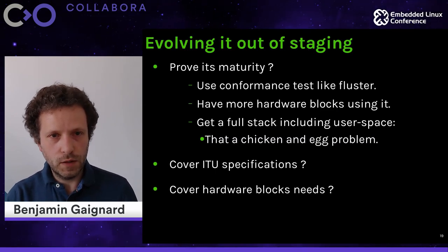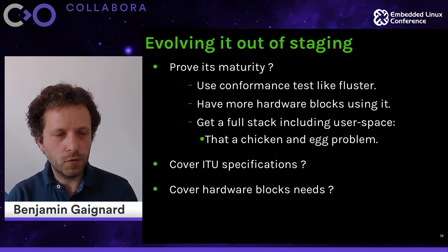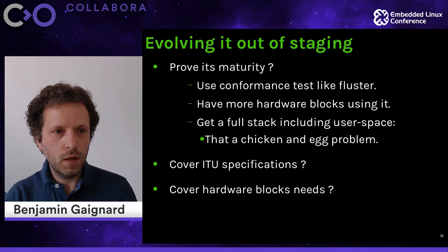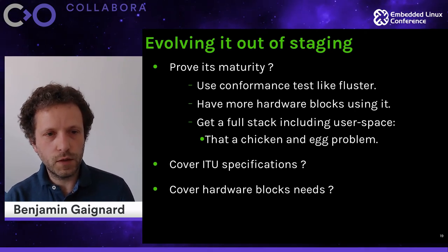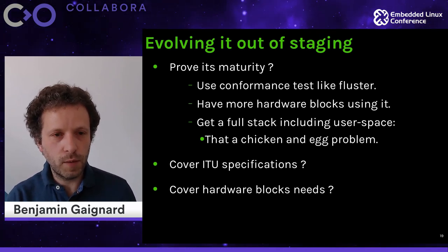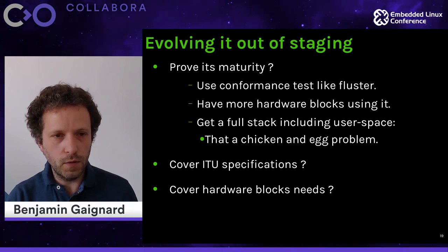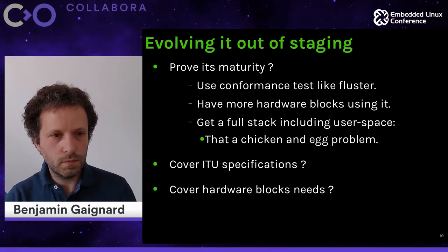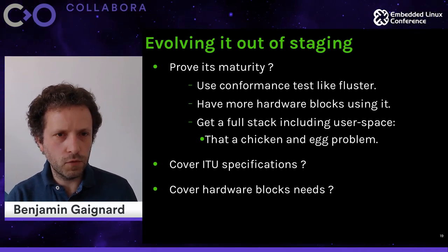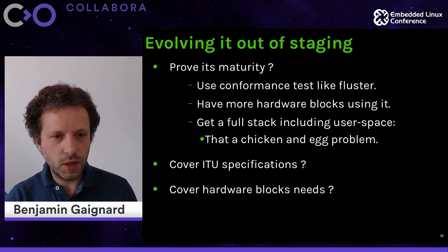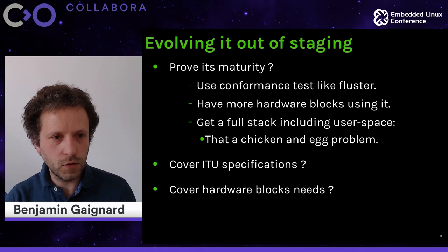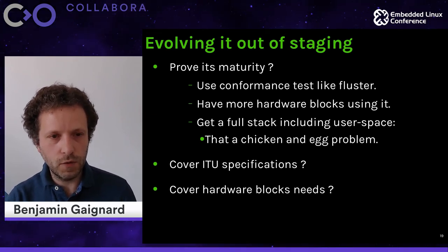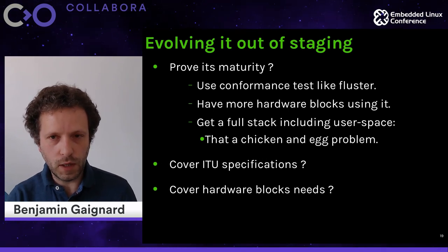What is involved to get it out of staging? We need to prove its maturity — for that, we use conformance tests like Fluster. We expect to have more hardware blocks using it, and we need a full stack including userspace. But that's somewhat circular: while it's not stable, userspace won't always deliver a full stack to prove it's working. What else can we do? Cover the specification — though the specification is quite huge. Cover all hardware block needs — we only have two hardware blocks, but I'll show that covering their needs should cover needs for incoming hardware as well.